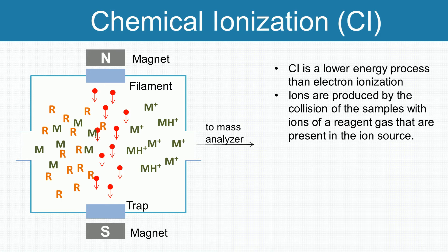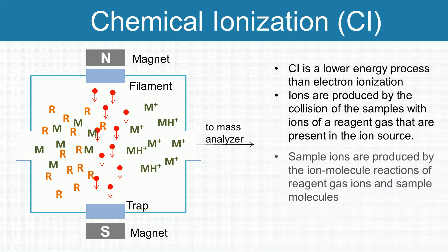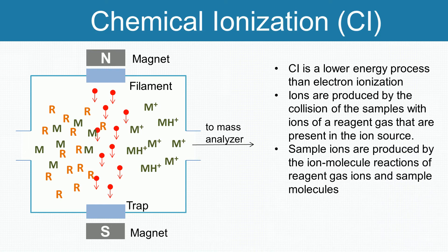Inside the ion source, the reagent gas is extremely more than samples. Reagent gas is first subjected to electron impact to produce reagent gas ions by the fast electrons from the filament. Sample ions are produced by the ion-molecule reactions of reagent gas ions and sample molecules.